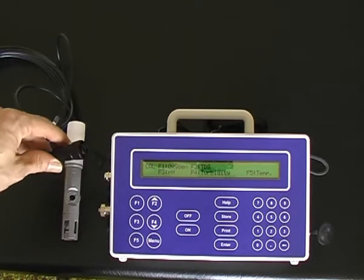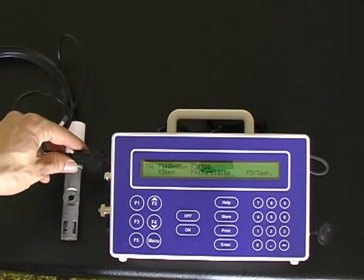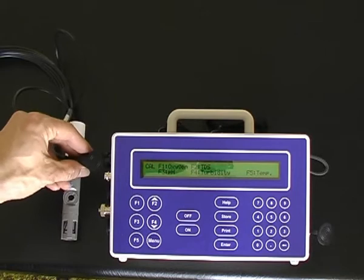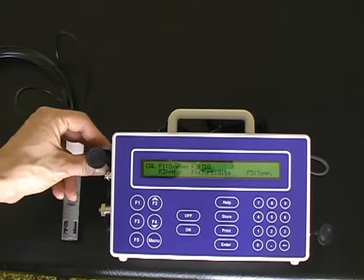First, connect the dissolved oxygen sensor cable to the 90FLT by plugging it into the correct socket, which is labeled.